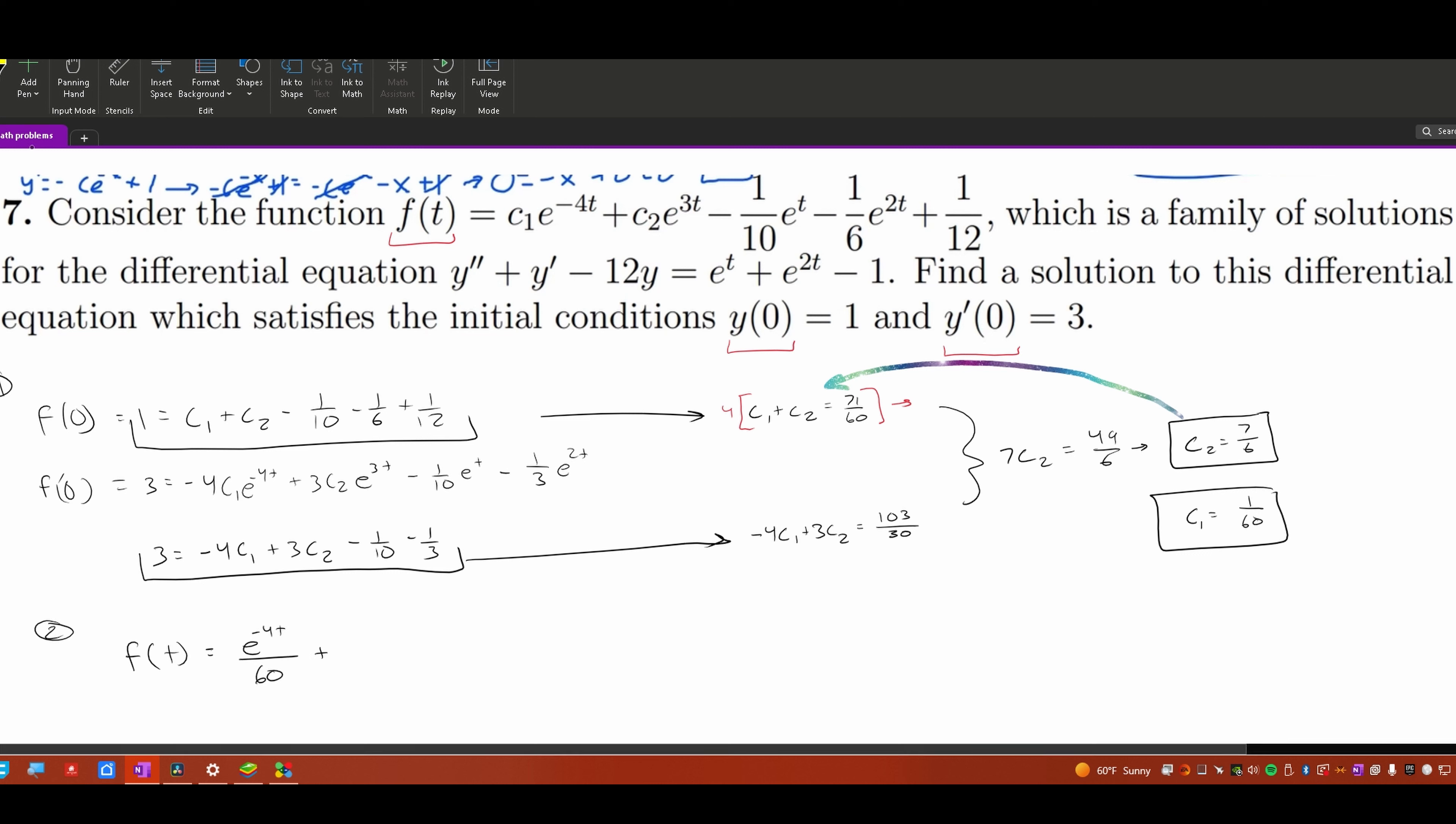and then minus 1 over 10 e^t, minus 1 over 6 e^(2t), plus 1 over 12. And that will be your answer and how you would go about solving any problem that looks like this. And I hope it helped.